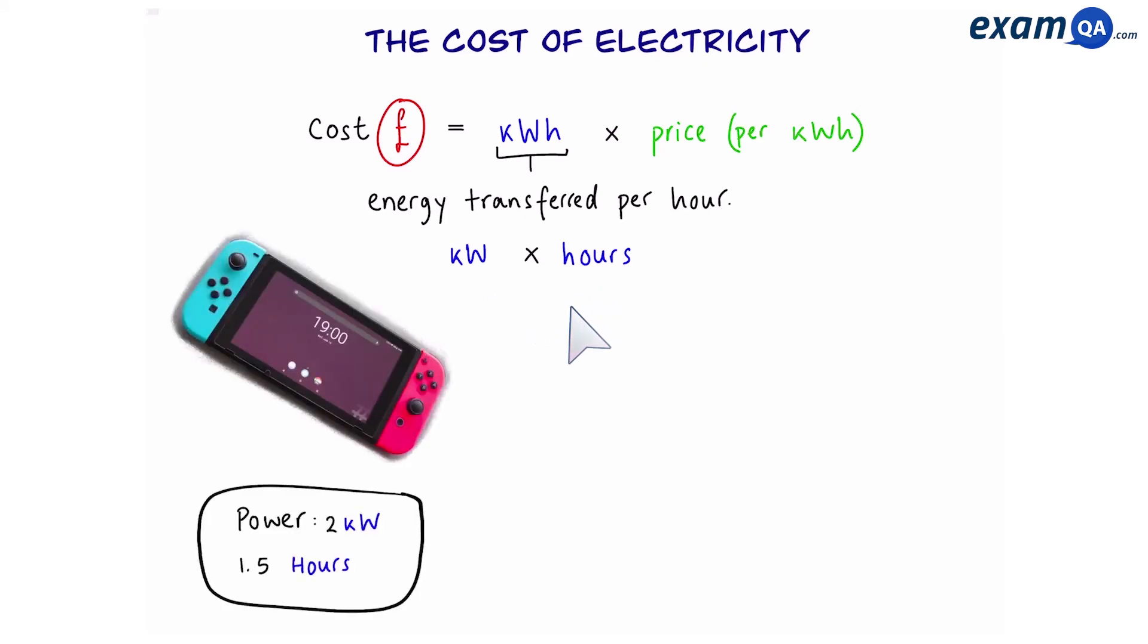For example, this games console has a power rating of two kilowatts and we use it for one and a half hours. So to work out kilowatt hours we do two times 1.5 and that gives us three kilowatt hours. Now we times by price. To get the price we look at our tariff. The tariff says that it costs us five pence per kilowatt hour. So we do three times five which equals 15 pence or 0.15 pounds.